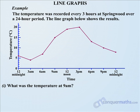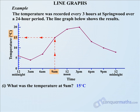Our first question: what was the temperature at 9am? So we look for 9am there, go directly up to the line, and then we move across and we can see that it hits the temperature at 15. The units are degrees Celsius, so we make sure that we write 15 degrees Celsius.